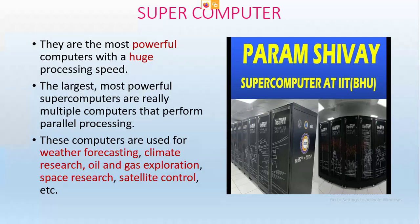The last one is supercomputer. Supercomputers are the most powerful computers with a huge processing speed. The largest, most powerful supercomputers are really multiple computers that perform parallel processing. These computers are used for weather forecasting, climate research, oil and gas exploration, space research, satellite control, etc. As you see in the picture, Param is India's supercomputer.